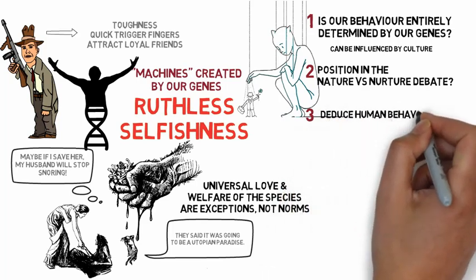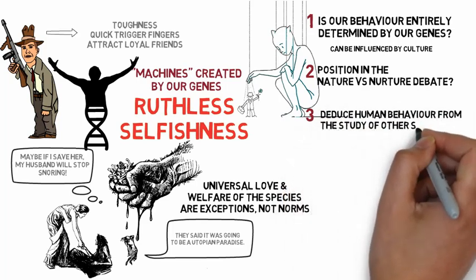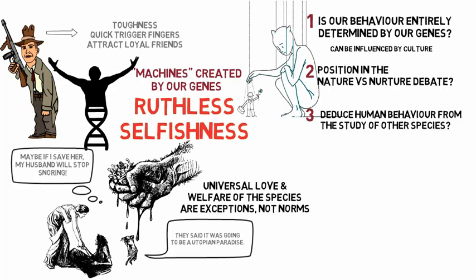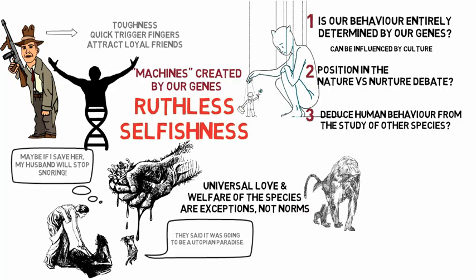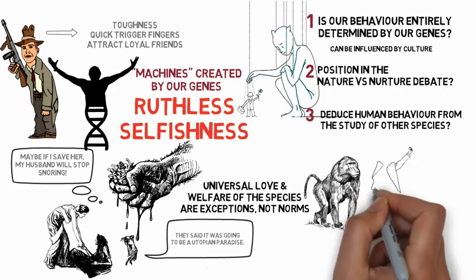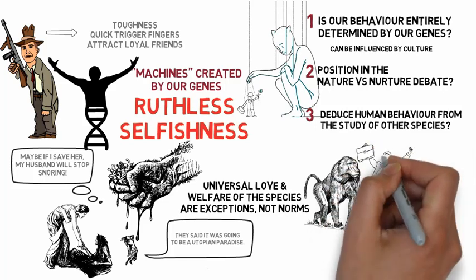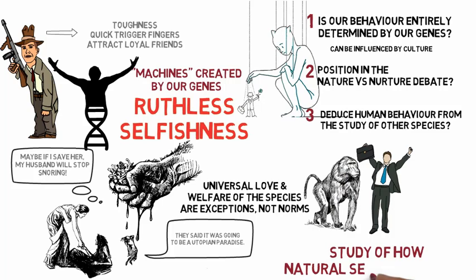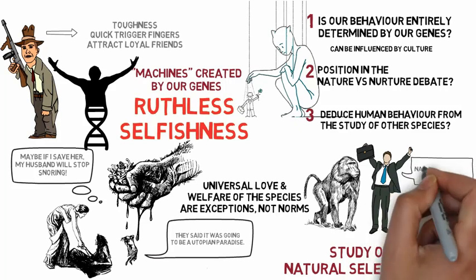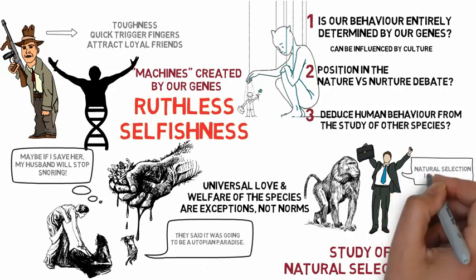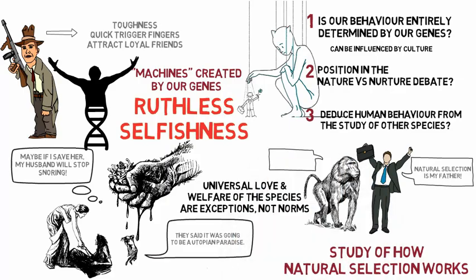Thirdly, Dawkins reminds us he is not drawing conclusions about the behavior of human beings through the study of other species — for example, the observation that baboons act selfishly must mean that humans act selfishly too. Instead, his starting point is attempting to study the way natural selection works in order to argue that anything that evolved by natural selection — for example, baboons, humans, and all other living creatures — should be selfish.